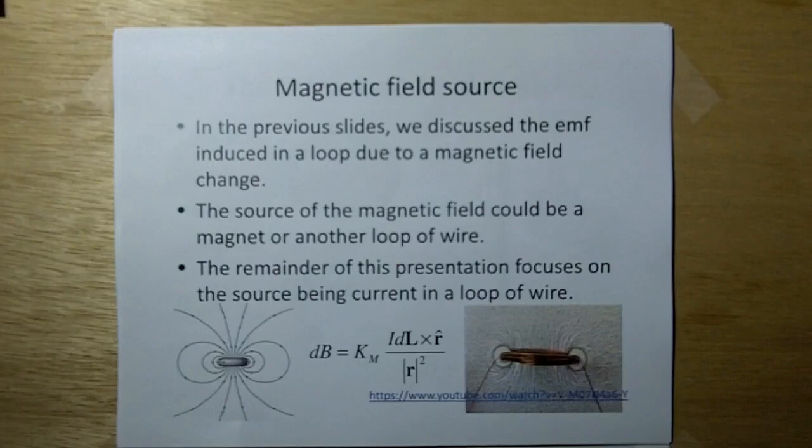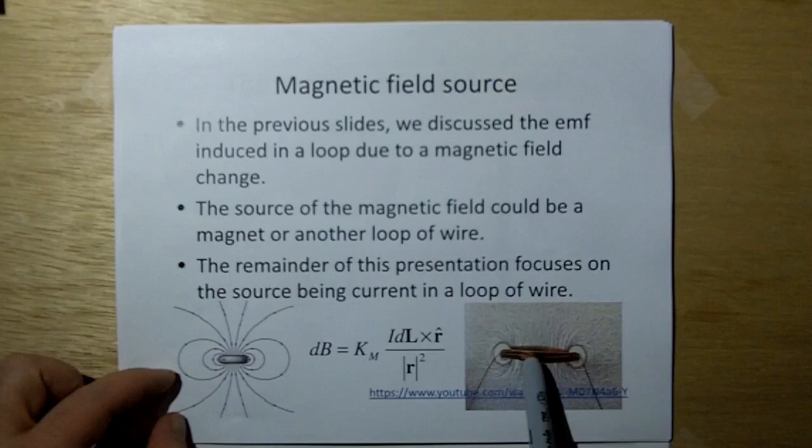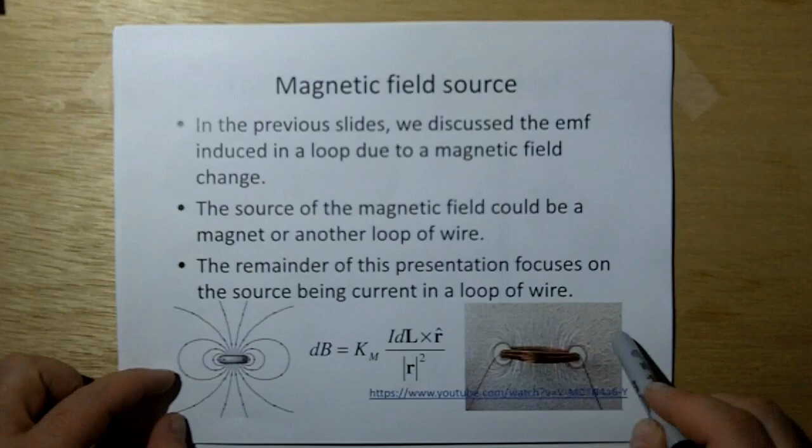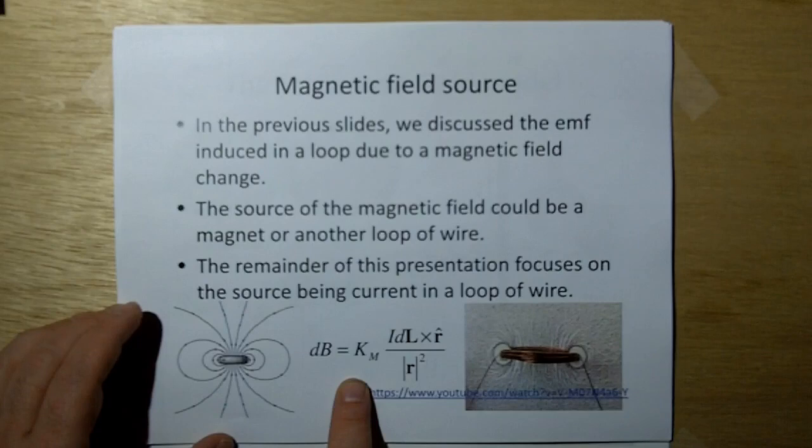In the previous slide we discussed EMF due to a magnetic field. The source could be a magnet or another loop of wire. Here's a loop of wire, and the magnetic field lines look the same. These are iron filings suspended in oil as multiple turns of wire go through and current is passed through the loop. If I remember, I'll put the link in the video. This magnetic field is defined by this model here.